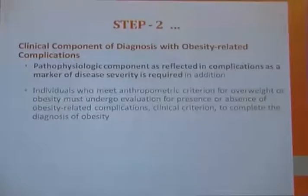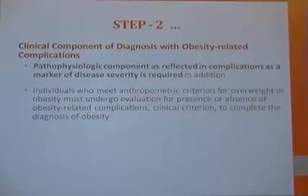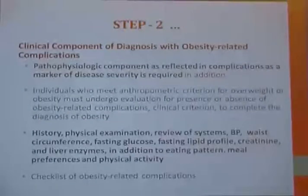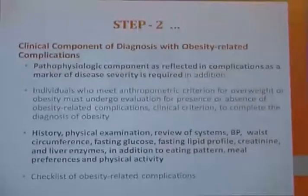The clinical component of diagnosis with obesity-related complications is step two. The pathophysiology component, as reflected in complications as markers of disease severity, is required in addition. Individuals who meet anthropometric criteria for overweight or obesity must undergo evaluation for the presence or absence of obesity-related complications to complete the diagnosis. Important assessments include history, physical examination, blood pressure, waist circumference, fasting glucose, lipid profile, creatinine, liver enzymes, eating patterns, and physical activity level.